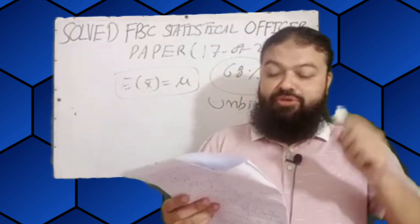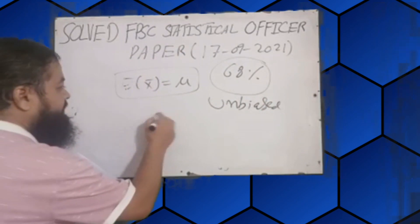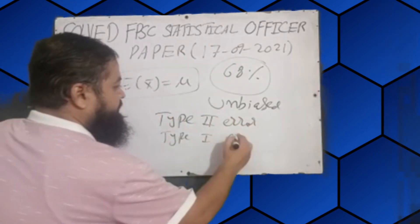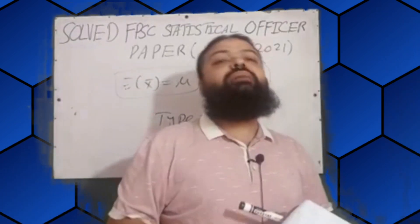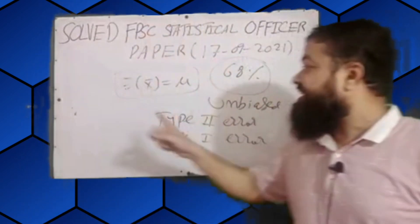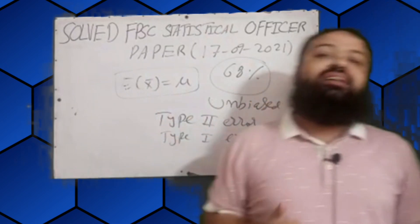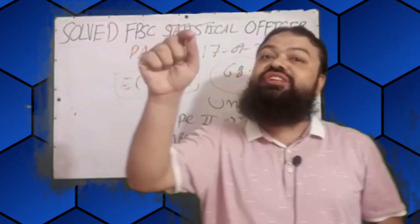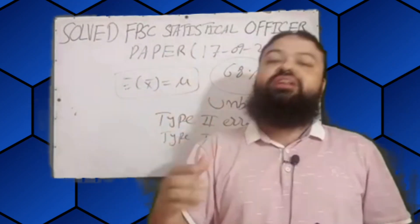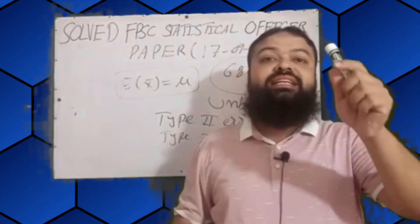Question number eight: when does Type 2 error occur? When we accept the null hypothesis H₀ when it is false, that is a Type 2 error. When we commit Type 1 error, it is when we reject the null hypothesis H₀ when it is true. Please keep in mind: accepting H₀ when it is false is Type 2 error; rejecting H₀ when it is true is Type 1 error.